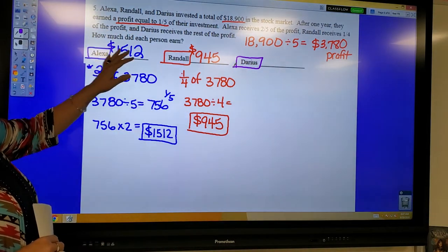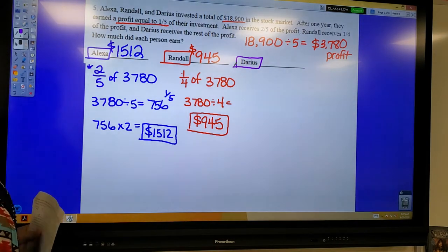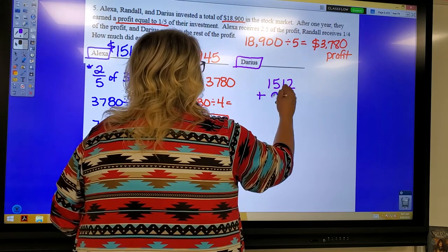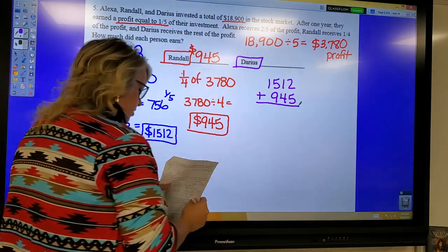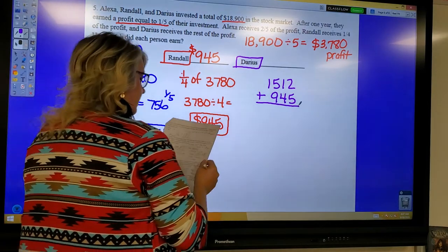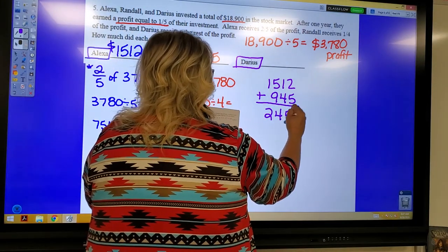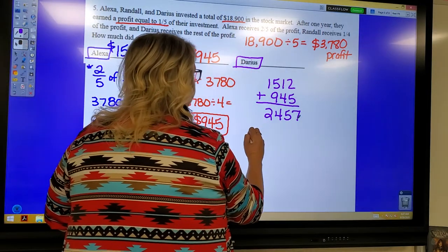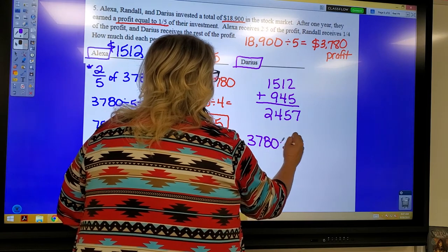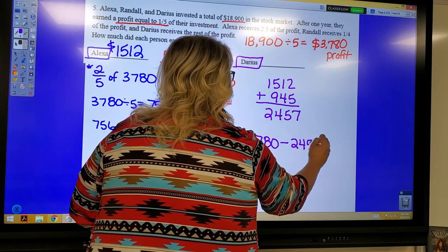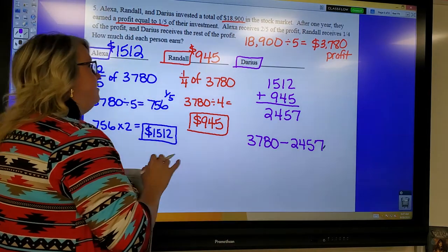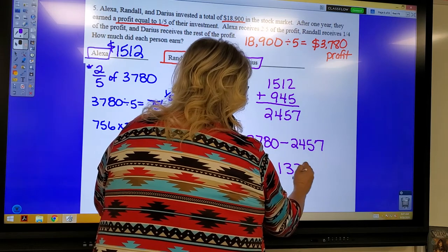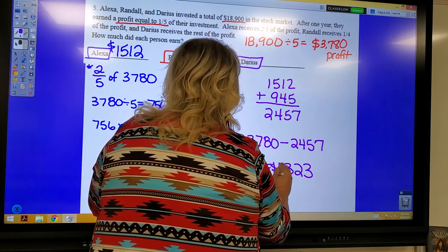Darius receives the rest of the profit. So we need to figure out how much Alexa and Randall have already taken. So first I'm going to find $1,512 plus $945. Remember, you get to use a calculator, so you might as well take advantage of that. It's $2,457 that Alexa and Randall have already taken. So Darius is going to get $3,780 minus the $2,457 that has already been given to Alexa and Randall, and we end up with $1,323 for Darius.